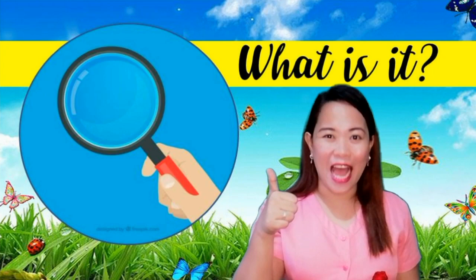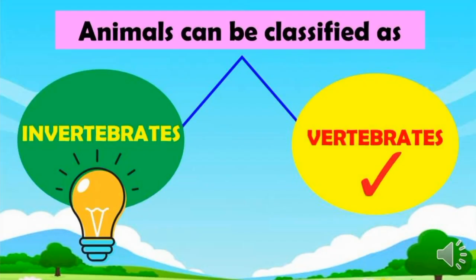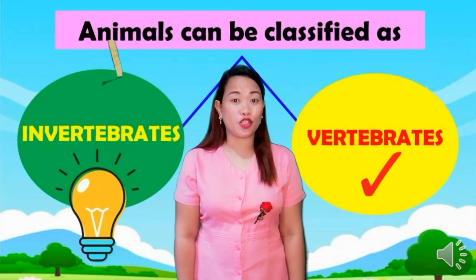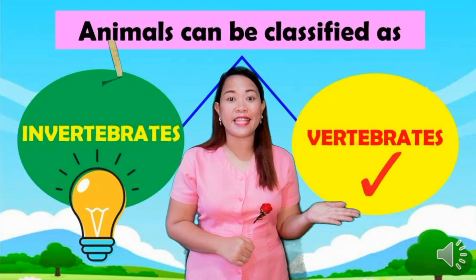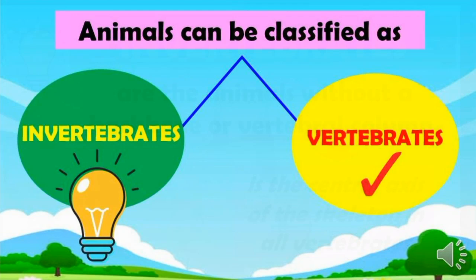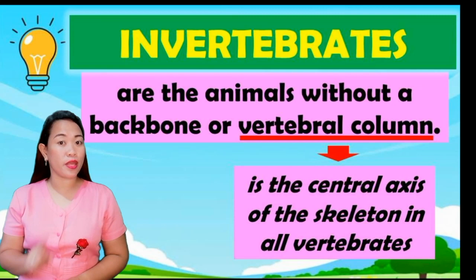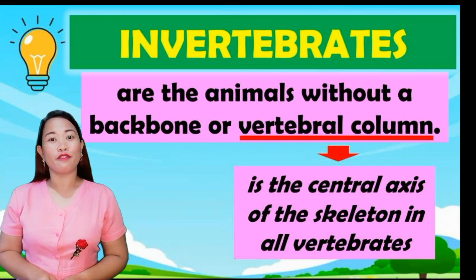Good job! You did great! Now let's move on. Animals can be classified into two: vertebrates and invertebrates. We have already learned about vertebrates. Now, we are going to proceed with invertebrates. Invertebrates are animals without a backbone or vertebral column. The vertebral column is the central axis of the skeleton in all vertebrates.